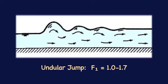According to the upstream Froude number, the hydraulic jump classifies into: One, undular jump 1 to 1.7.